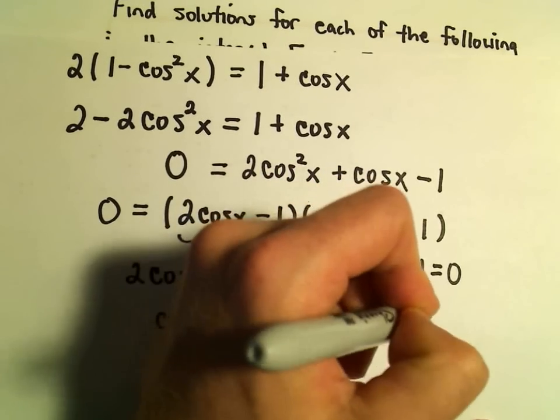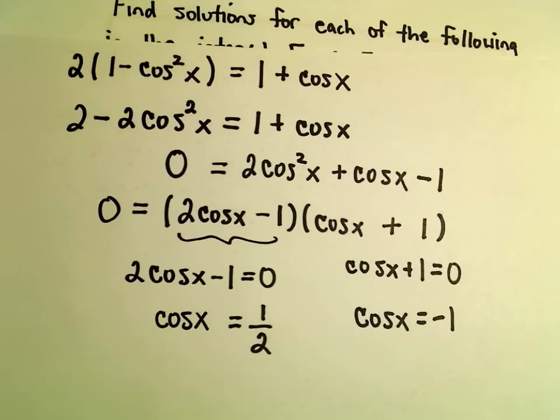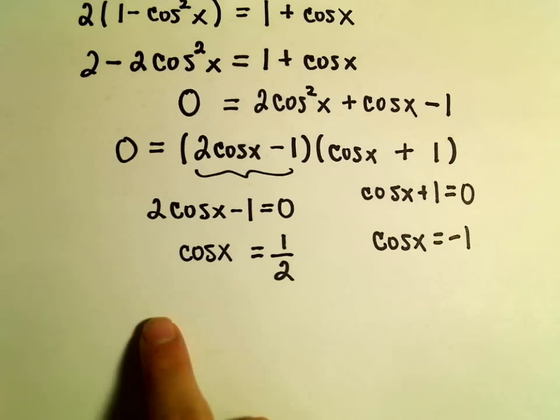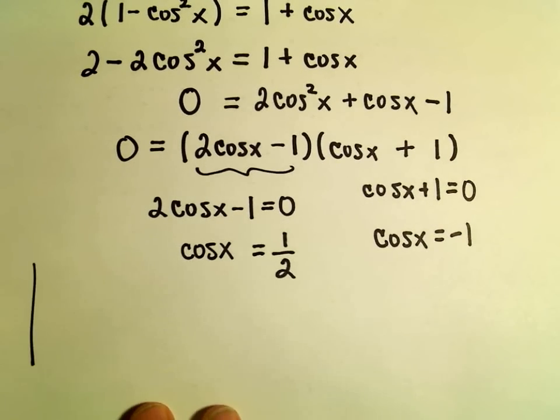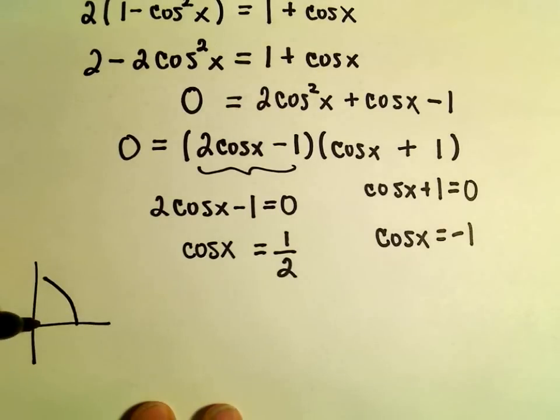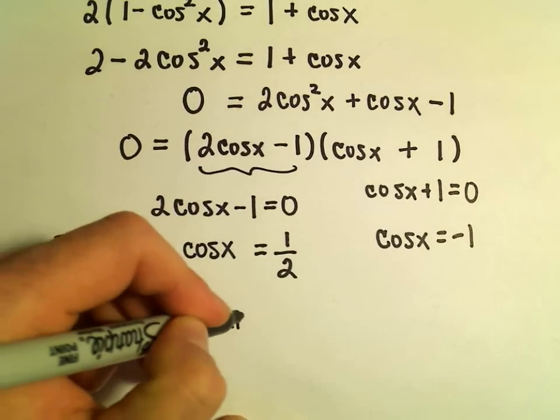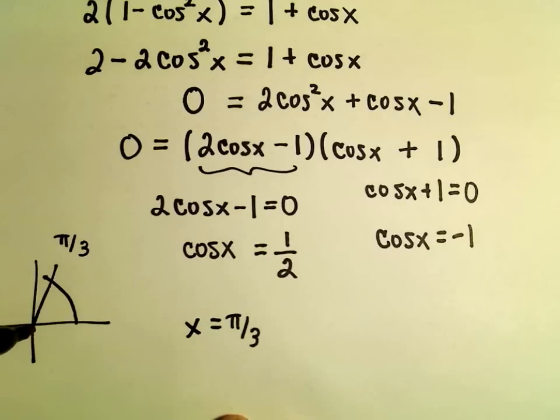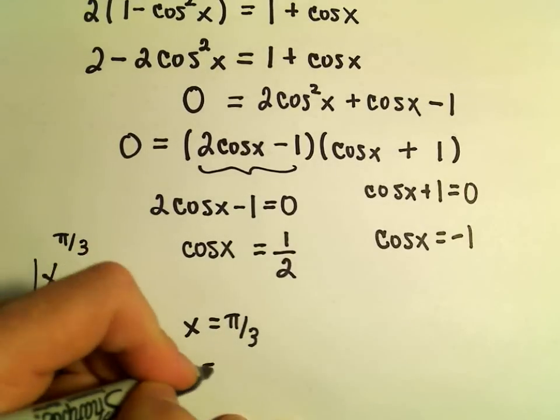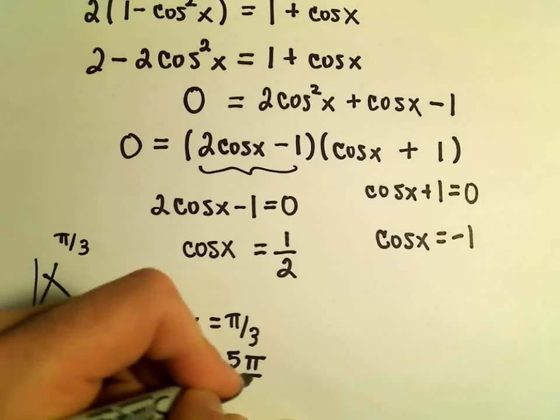And now, I have to remember where cos x = 1/2. Cos x = 1/2, I believe, at π/3. That would be one of our solutions. And also, in quadrant 4, cos x would be 1/2, and that would be at the angle 5π/3.